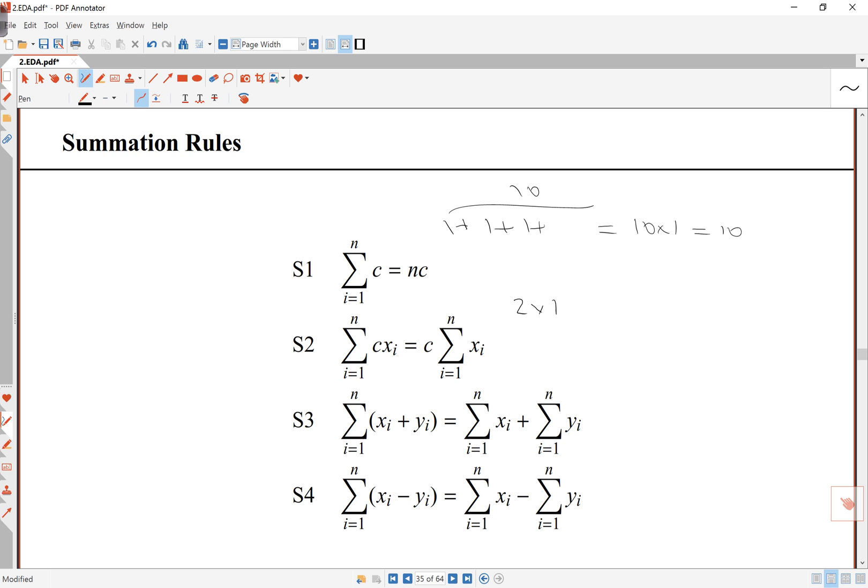If I multiply by a constant first before I add them up, it's the same as adding the numbers and then times the constant. So I'm going to say 2 times 1, plus 2 times 2, plus 2 times 3. I can factorize the 2 outside.